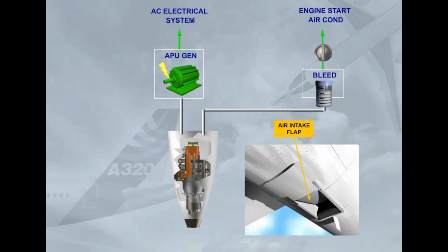The APU has an electrically operated air intake flap which, when it is opened, brings external air to its compressor inlet.